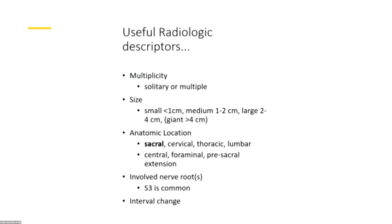It's important that when they're described, a lot of times the neuroradiology reports will not be very specific. They'll kind of mention them in passing — 'we also see cysts incidentally, unlikely to be symptomatic' — but there's not a drill down as far as how many there are, whether they're small, medium, large, or giant, the anatomic location, and in particular whether it's central within the canal, foraminal, or presacral extension, and which nerve root is involved. S3 is very common — it's often described as an S2 because that's the vertebral level you see it at, but it's actually the S3 nerve root often compressing the S2 nerve root and causing symptoms.